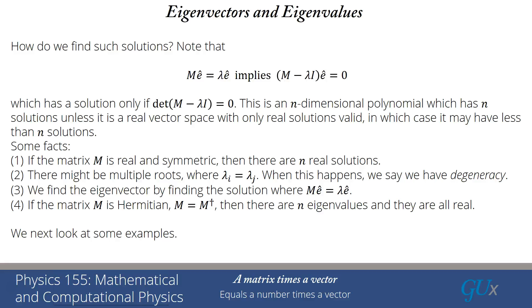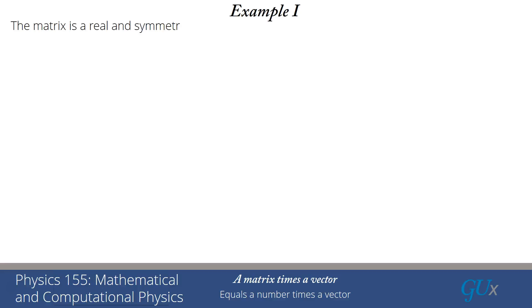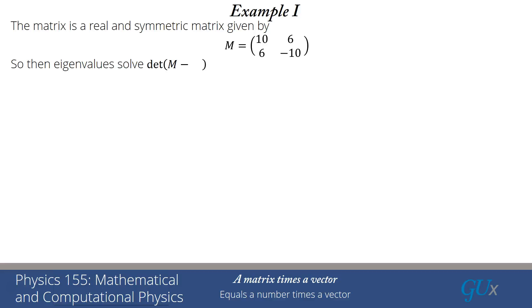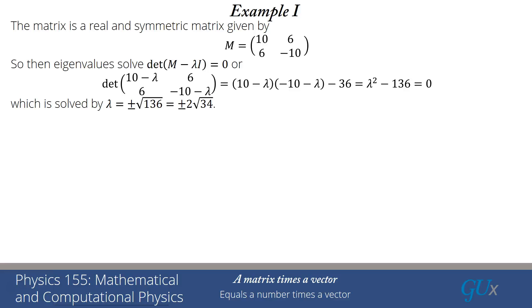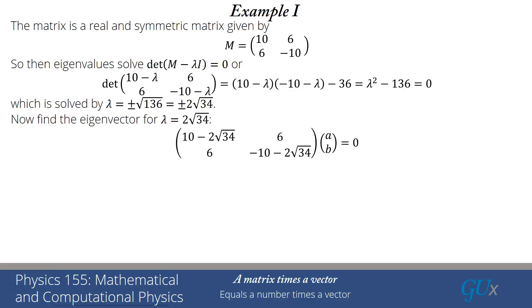Let's look at some examples. For the first 2x2 example, the matrix is real and symmetric: [[10, 6], [6, -10]]. To find eigenvalues, we solve det(M minus lambda I) equals zero. Subtracting lambda from the diagonal and taking the determinant gives (10 minus lambda)(minus 10 minus lambda) minus 36, which simplifies to lambda squared minus 136 equals zero. So lambda equals plus or minus the square root of 136, which factors as plus or minus 2 times the square root of 34.